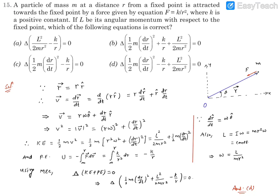Question number 15. A particle of mass M at a distance R from a fixed point is attracted towards the fixed point by a force given by the equation F equals K by R square, where K is a positive constant.